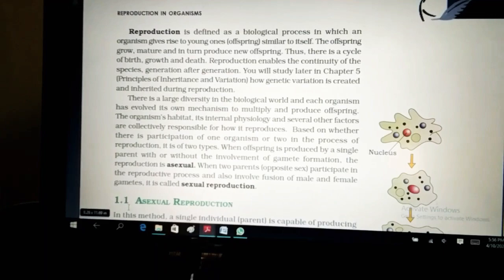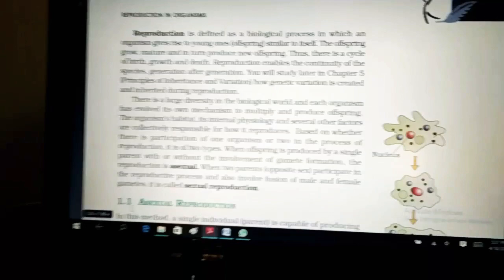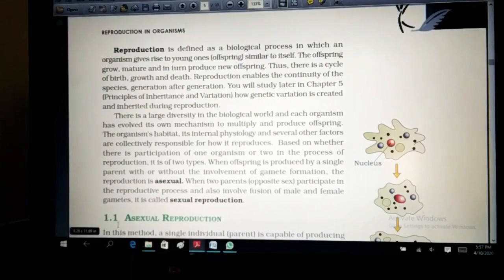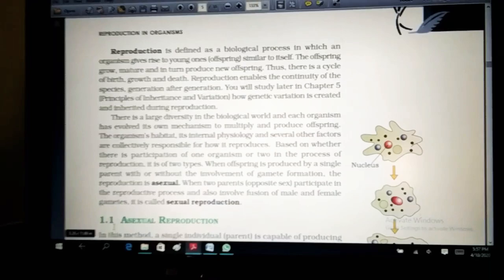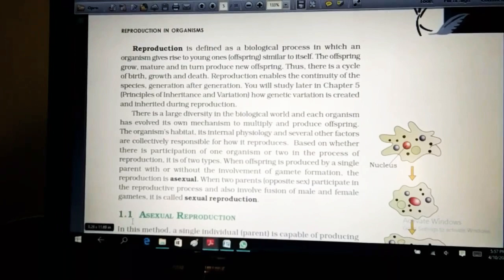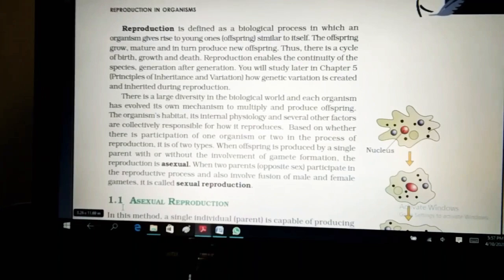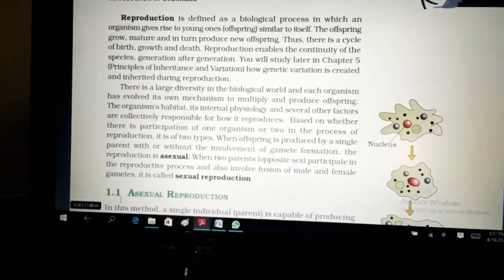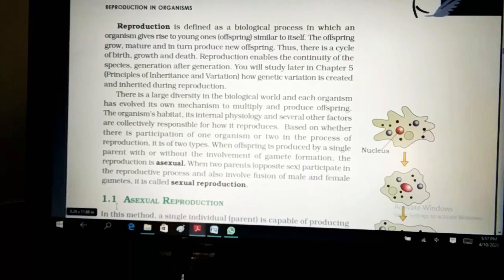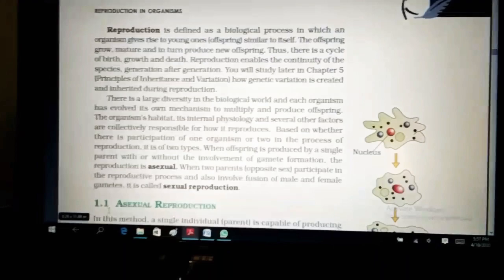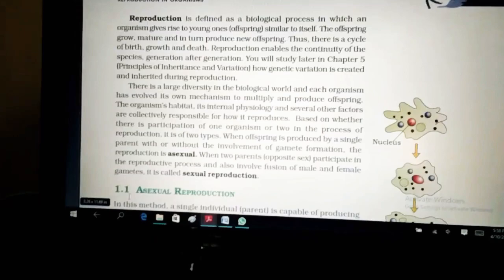The organism's habitat, its internal physiology and several other factors are collectively responsible for how it reproduces. The habitat I told, the environment that it is living in, maybe it is hot, it is humid, it is sometimes rainy, sometimes it is full of mud, sometimes it is very dry, arid conditions. You never know where the organism is living. Internal physiology means whether there is a developed system in that organism or not. Whether it would be capable of going on into the sexual reproduction or the asexual reproduction. Whether it has the capability of giving rise to new organisms by itself or whether it would divide upon itself.